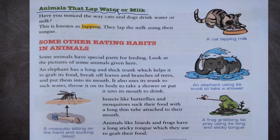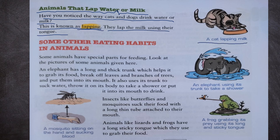Animals that lap water or milk: have you noticed the way cats and dogs drink water or milk? This is known as lapping. They lap the milk using their tongue. We can see a cat lapping the milk.